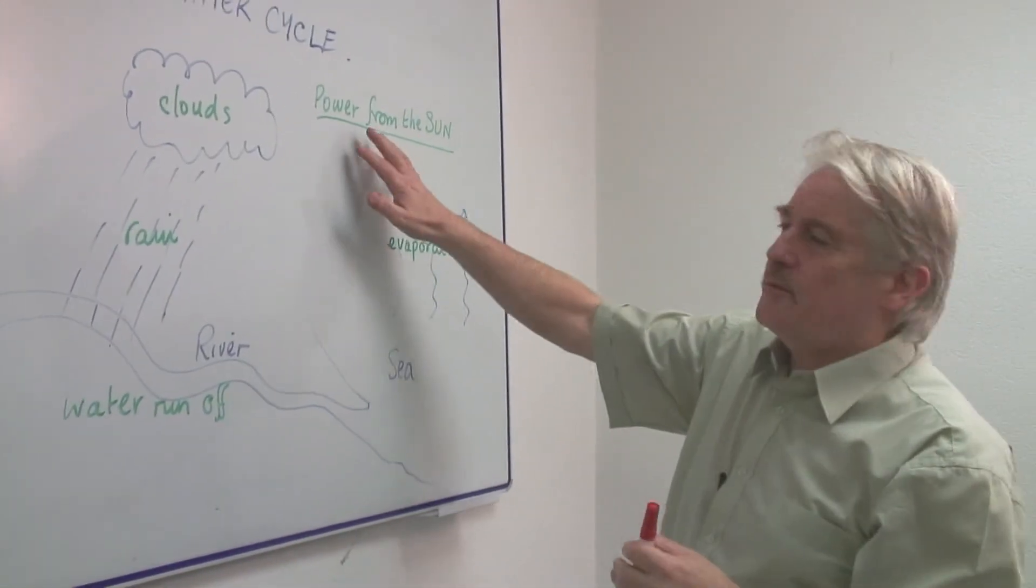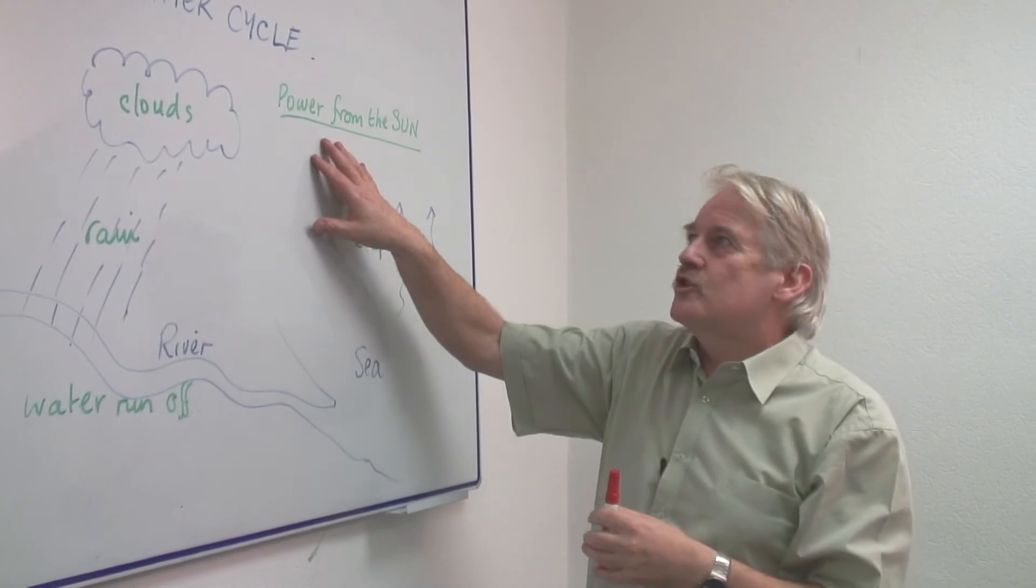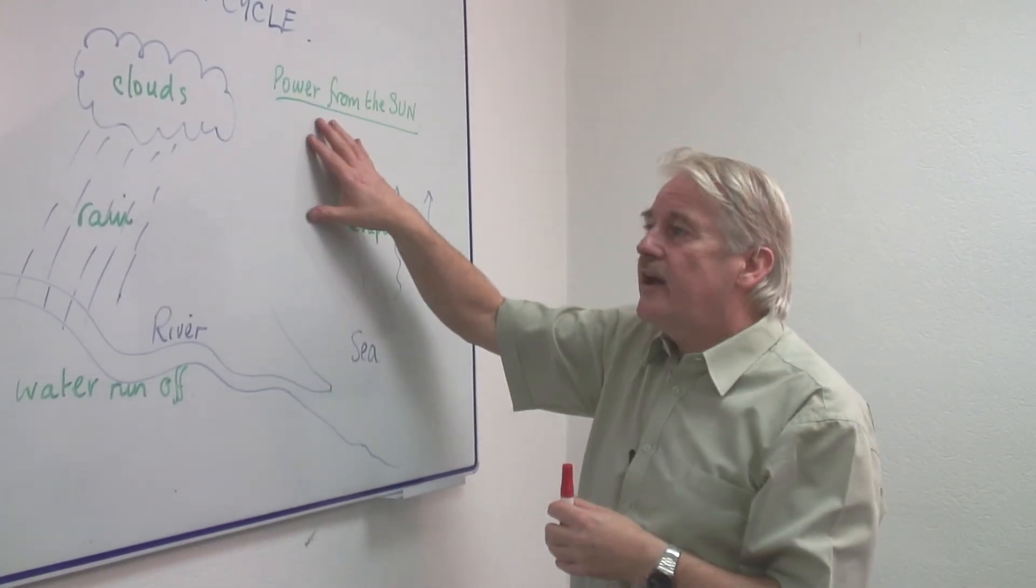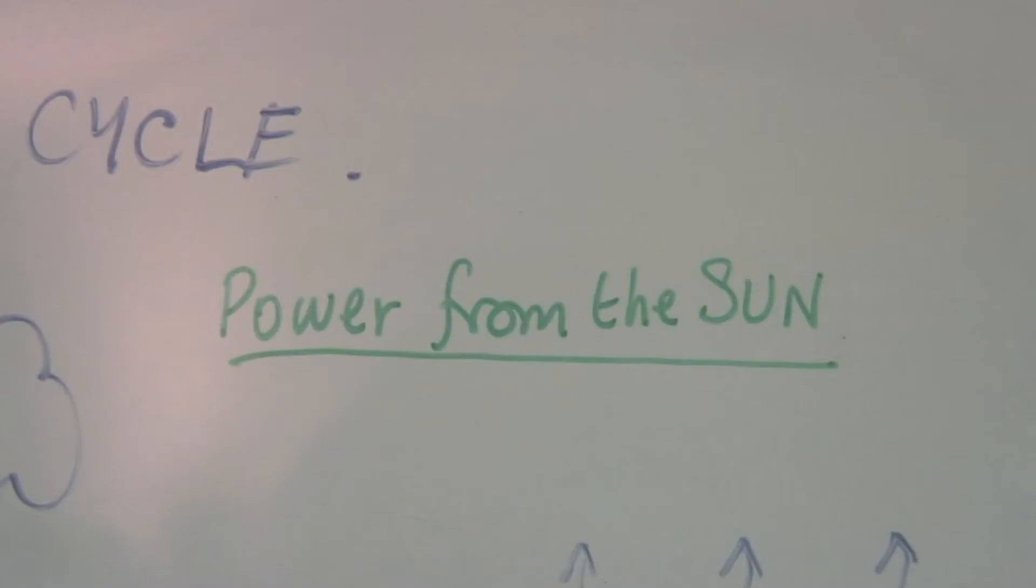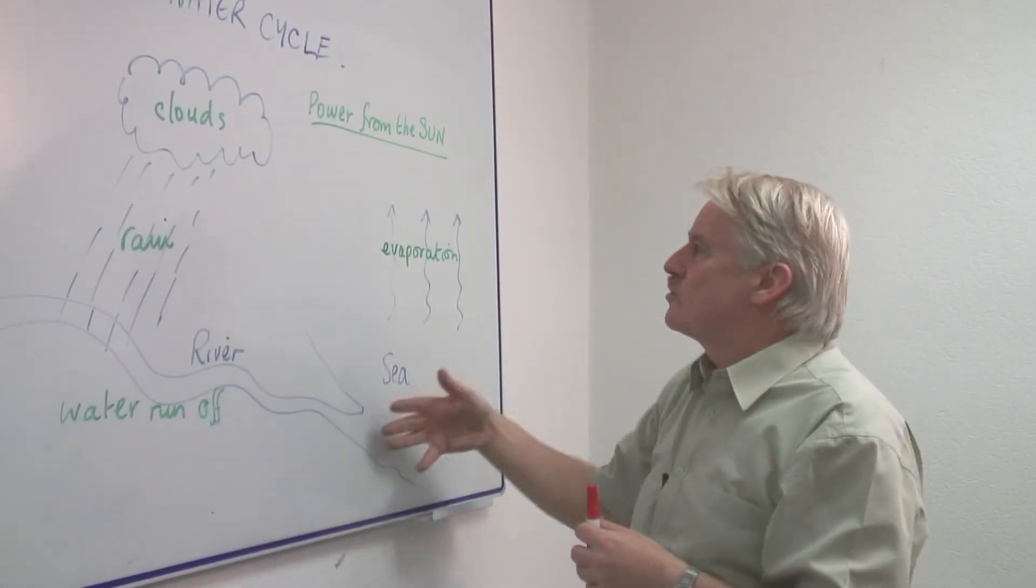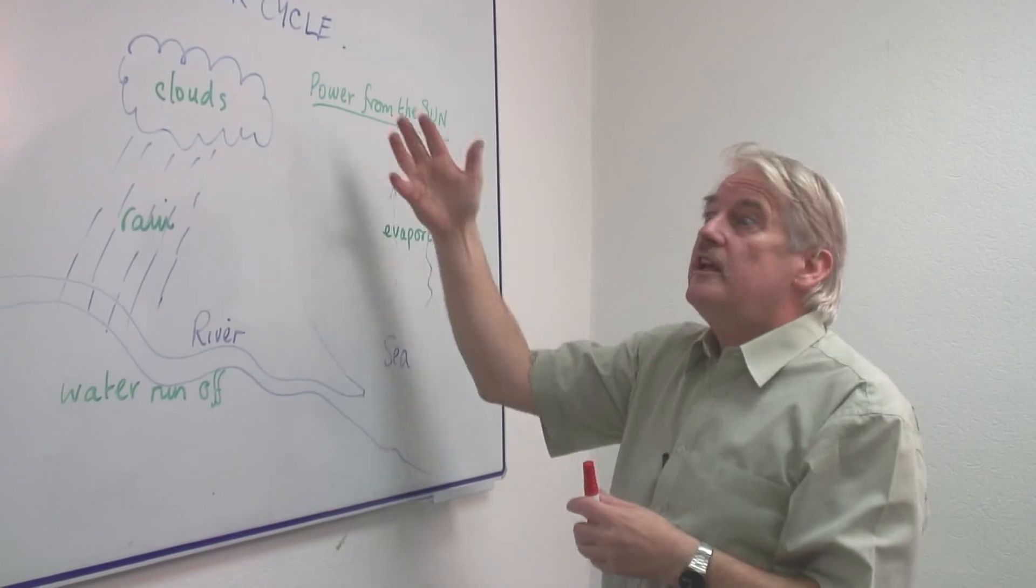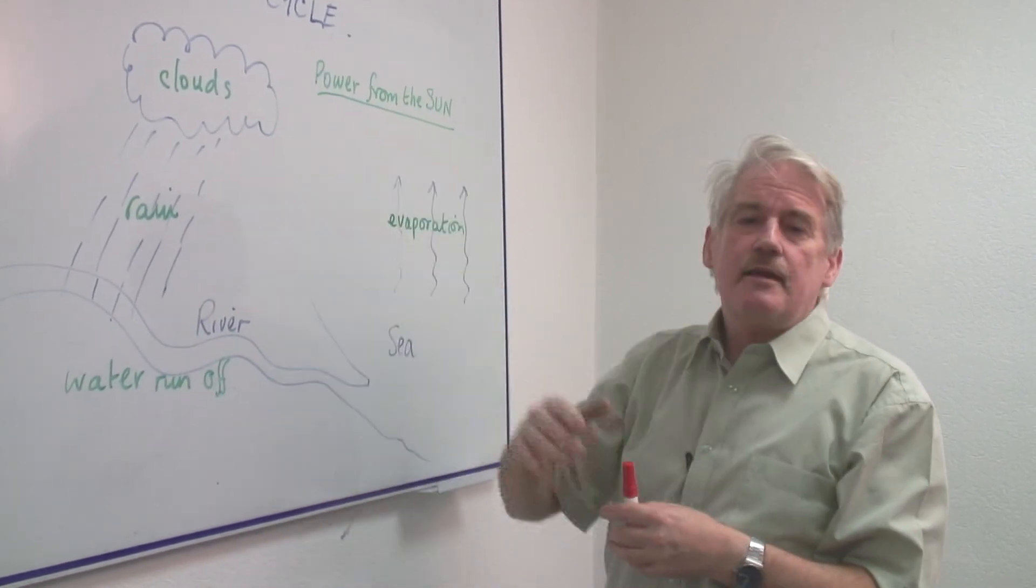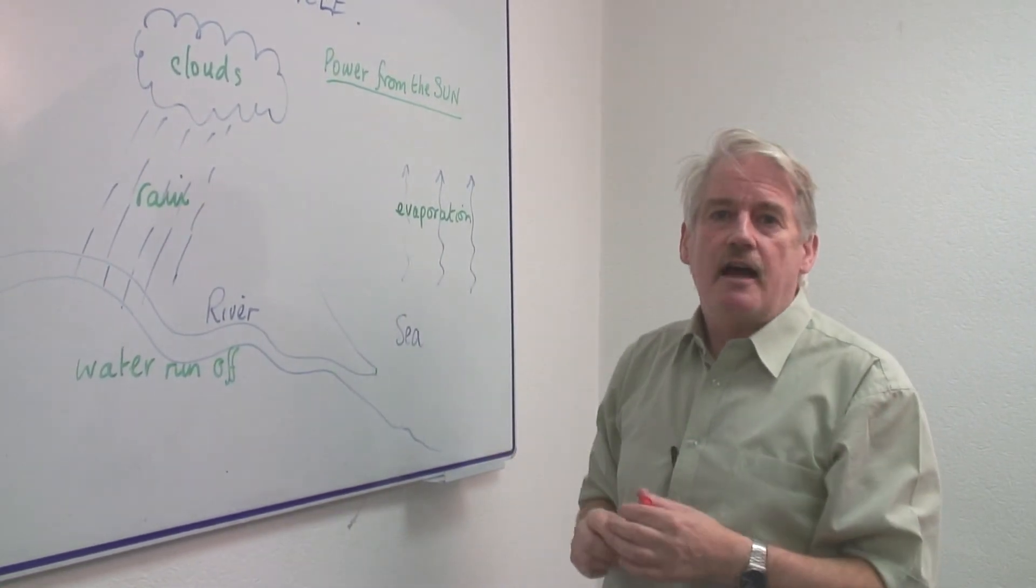But it needs the power from the sun to do it. So, the water cycle is, in fact, what the sun does for us. It turns the water through this cycle so that we can keep reusing the same water time and time again.